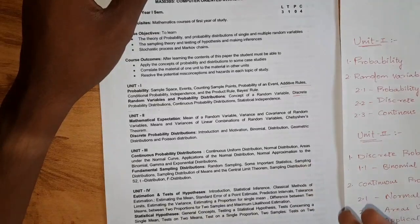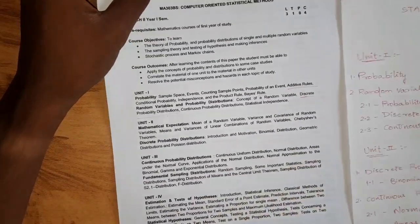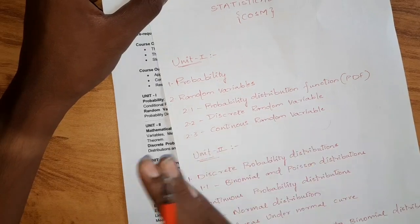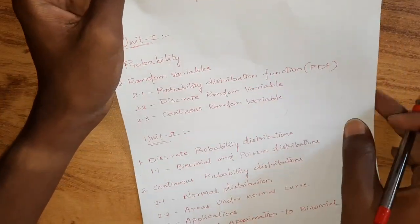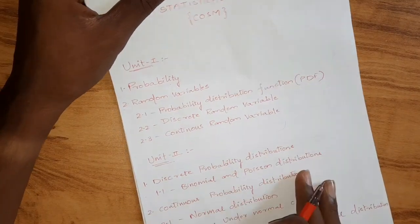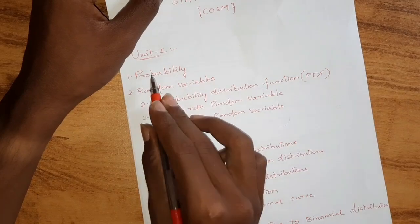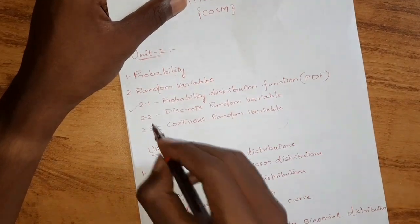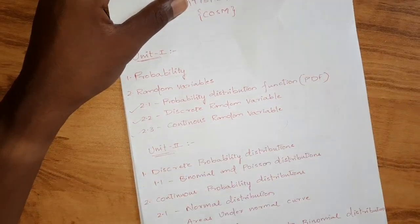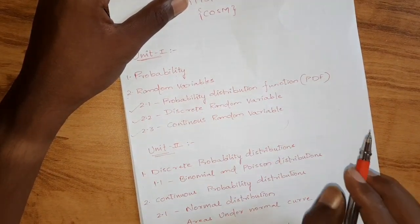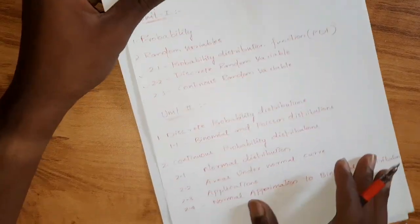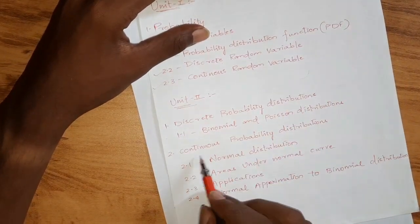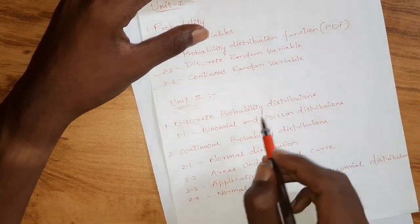Along with that, there are some basic probability problems. In the first unit, first chapter, we have to prepare these. In the second chapter, we discuss Random Variables. Topics include: Probability Distribution Function, Discrete Random Variable, and Continuous Random Variables. Random variables are 100% guaranteed to appear as a compulsory question. We also have two topics: Discrete Probability Distributions and Continuous Probability Distributions.